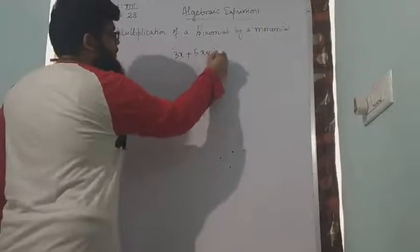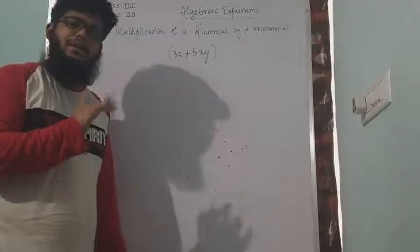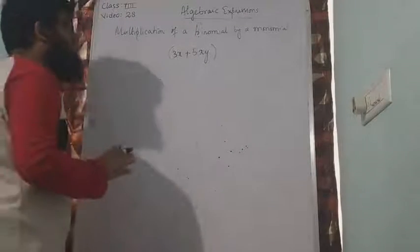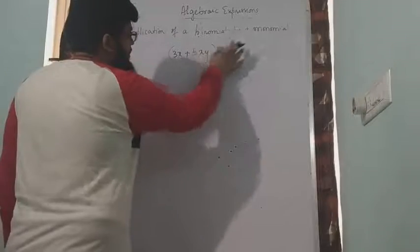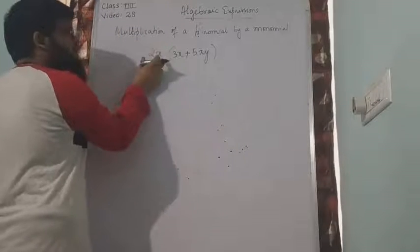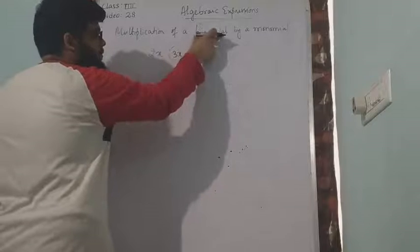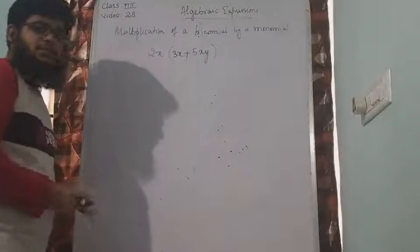So let me put brackets. Brackets means multiplication. Please remember that. When I put brackets it means it is multiplication. I should multiply this binomial from a monomial. I can write it here where the order where it is convenient. Let us suppose 2x. 2x is a monomial. I am multiplying this monomial from a binomial which is 3x plus 5xy.